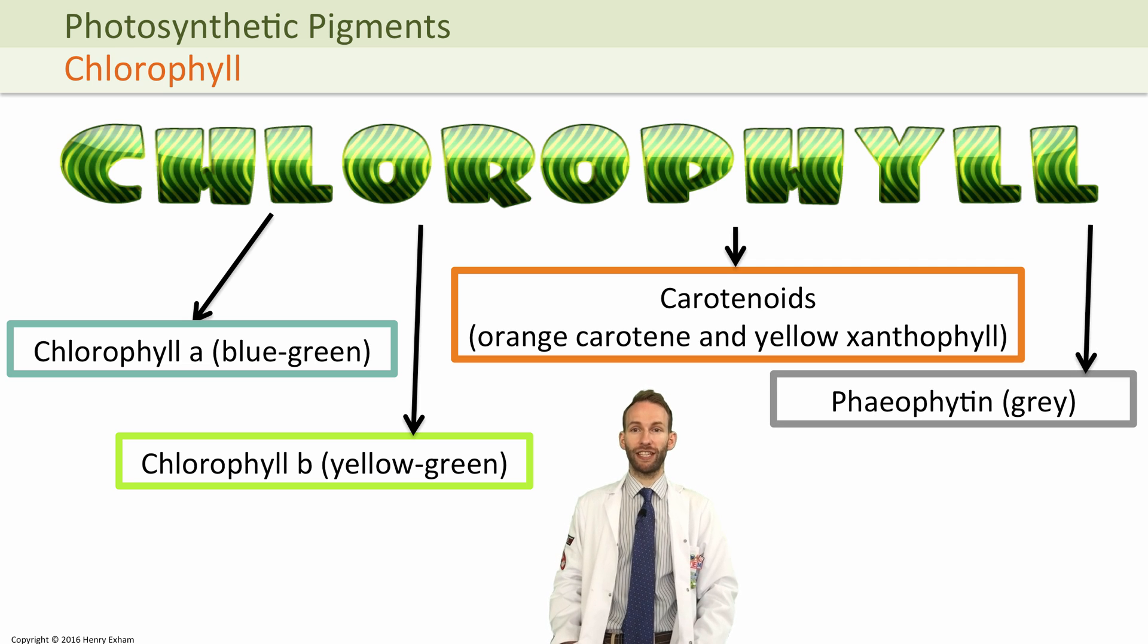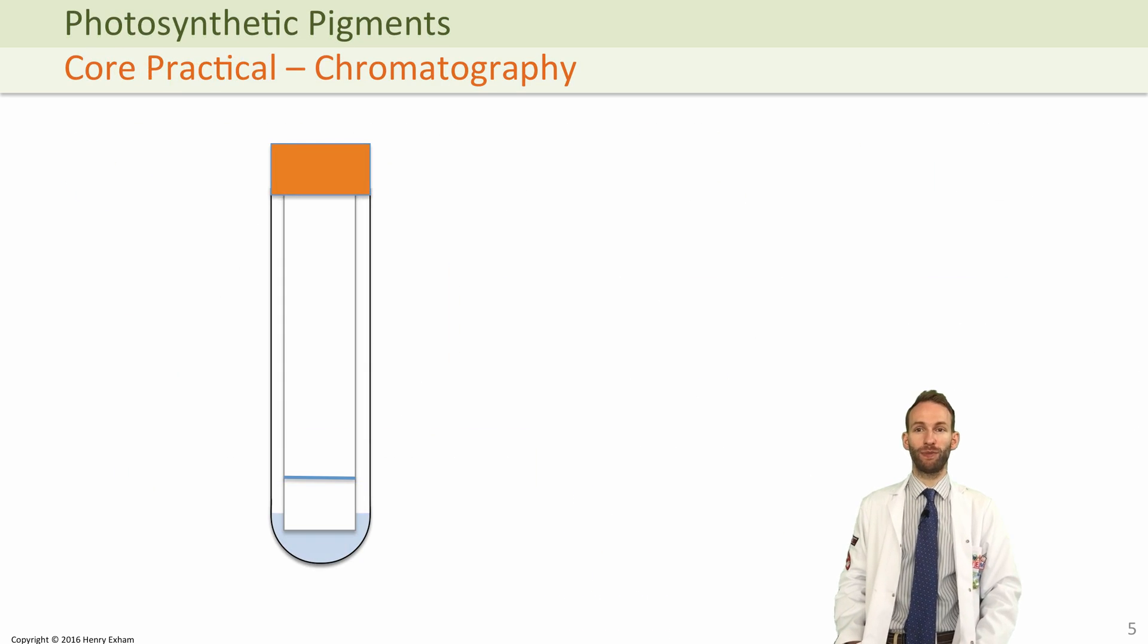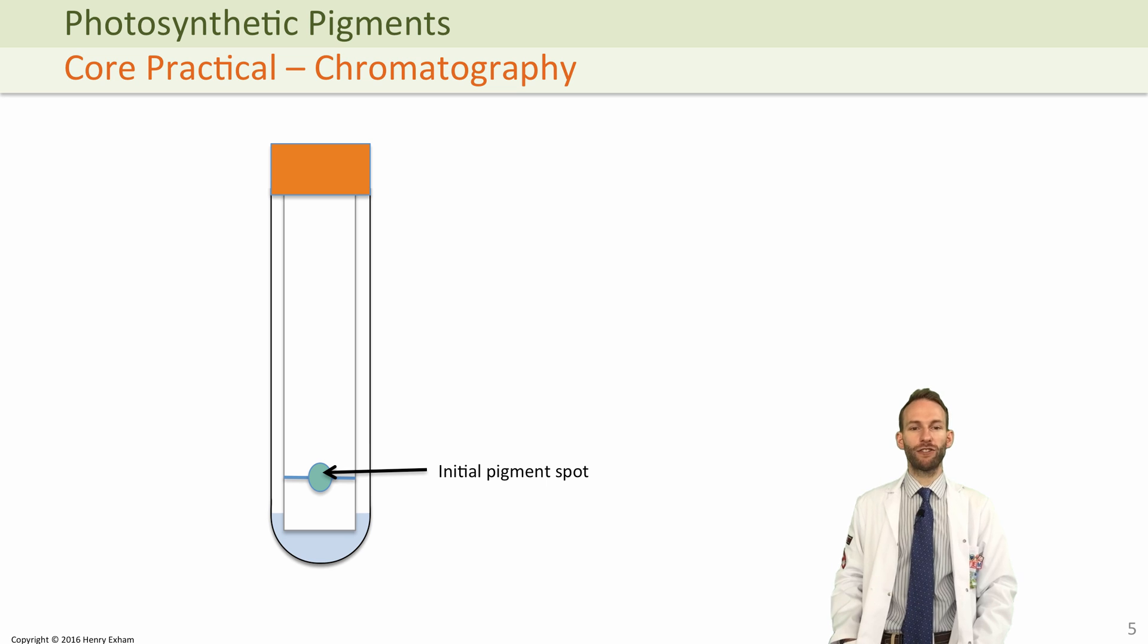You can actually do this in a practical. It's probably a practical you'll be doing in class using chromatography, maybe thin paper chromatography, where you take a plant, maybe a nettle, and you grind it up in a pestle and mortar and add some propanone, which will extract all the pigments from the chloroplasts. You put a dot of that on the bottom of your chromatography paper and then you suspend it in some solvent.